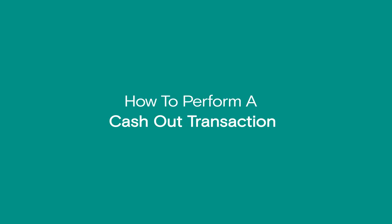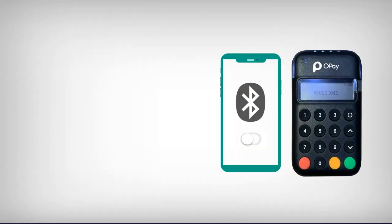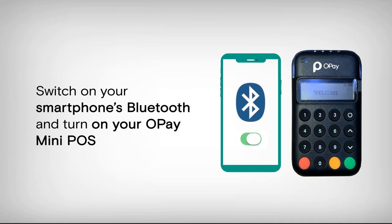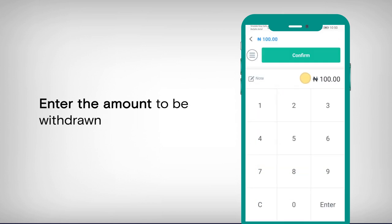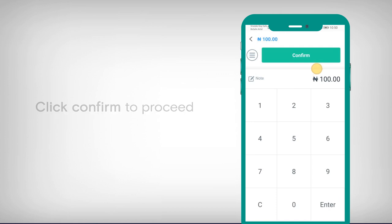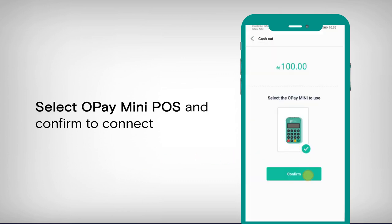How to perform a cash out transaction. Switch on your smartphone's Bluetooth and turn on your Opay mini POS. Select Cash Out on the business app homepage. Enter the amount to be withdrawn. Click Confirm to proceed. Select mini POS and confirm to connect.